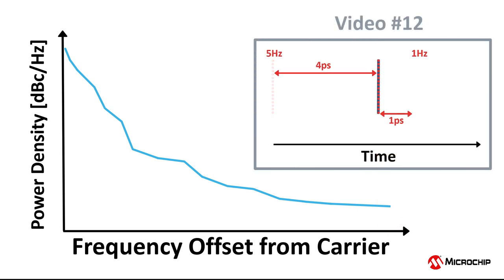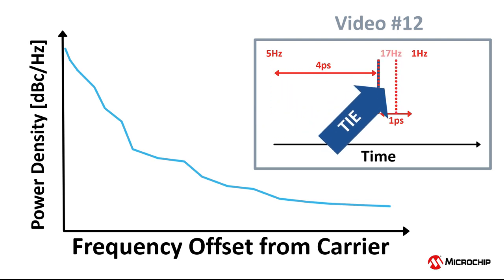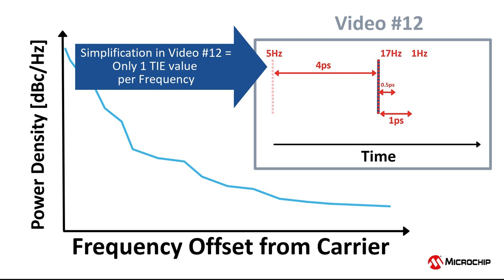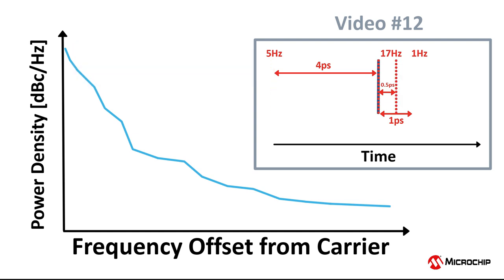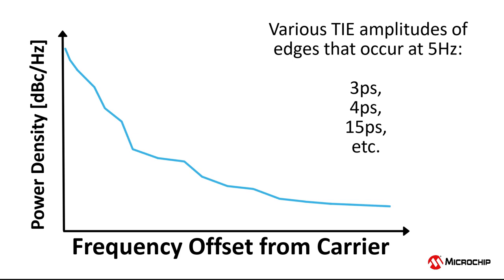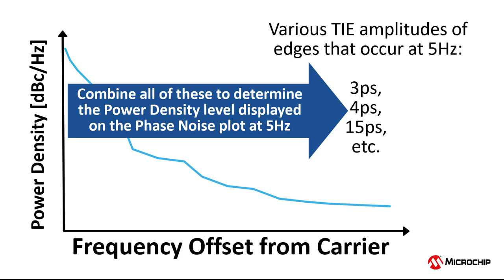In the previous video, I simplified things by having each specific TIE value — 1 picosecond, 4 picoseconds, or half a picosecond — occurring at a fixed frequency of a few hertz so that I could do some basic animations of the clock edges. In reality, though, the phase power at a given frequency is the combination of the power of all the edges that occur at that frequency. For example, the Fourier component corresponding to a frequency of 5 hertz may sometimes have its TIE amplitude be 15 picoseconds, or 3 picoseconds, or some other value — not just the 4 picoseconds used in the previous video. The combination of all of these phase power components occurring at 5 hertz determines the power level displayed on a phase noise plot at 5 hertz.